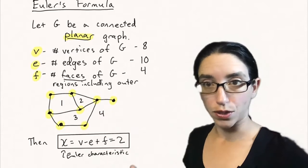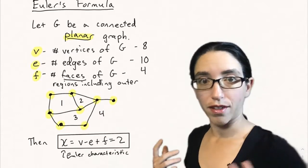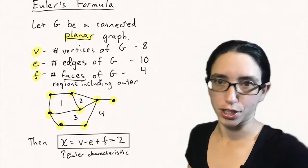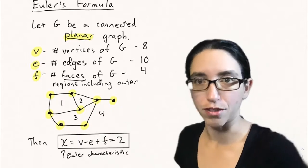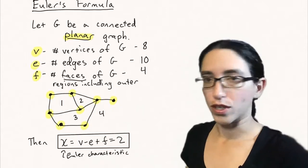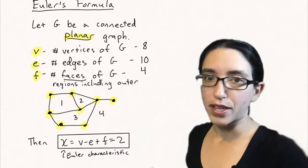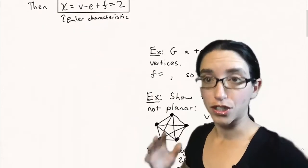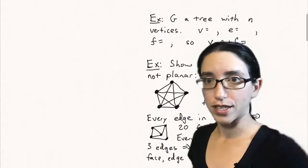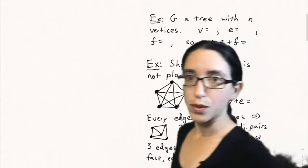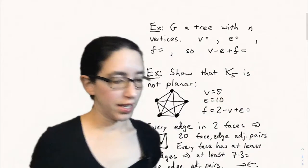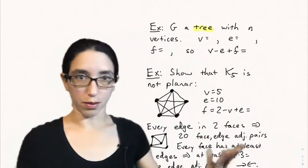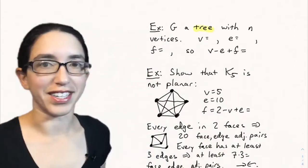The Euler characteristic V minus E plus F is a quantity you can also talk about when the graph is not embedded in the plane but embedded on a torus, as Dr. Priest discussed in her videos this week, or some other geometric shape. But in the case that it's embedded on the plane, we'll see that it's always two. So it was two for that graph, but let's see other examples where we can compute the Euler characteristic and see that it is two.